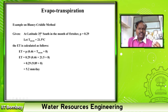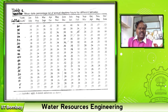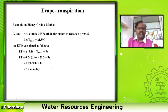At an altitude of 35 degrees south in the month of October, this is the data. Latitude is 35 degrees, south hemisphere, month is October. Go to this table — 35 degrees south in the month of October. So it is 0.29, so P is 0.29.